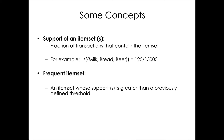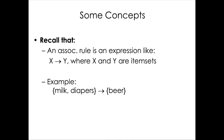Recall that an association rule is an expression or pattern like X implies Y, where X and Y are item sets. One example is: milk and diapers implies beer.